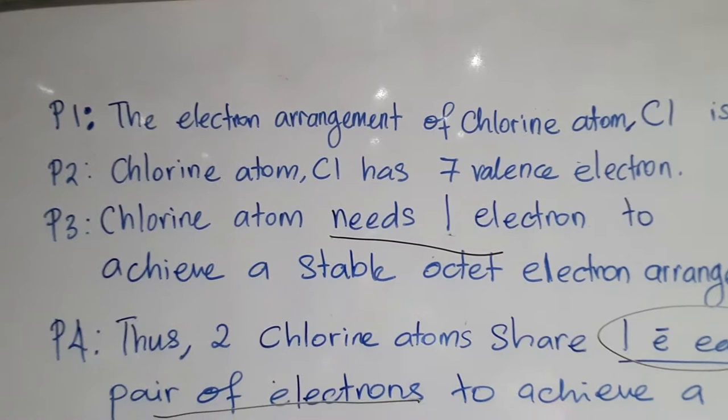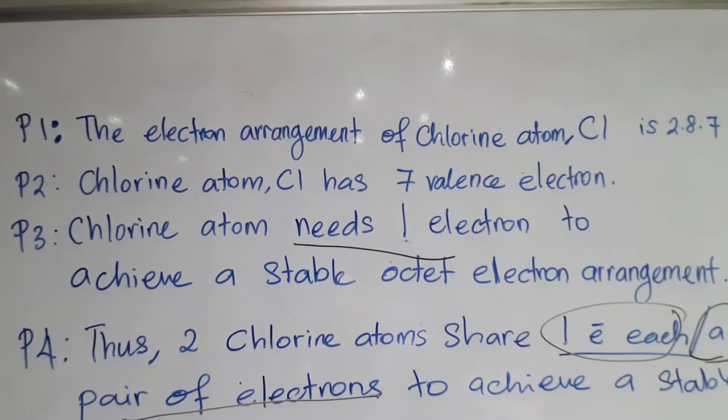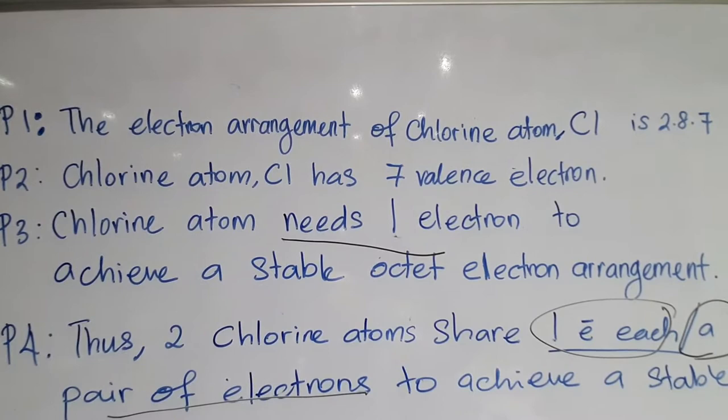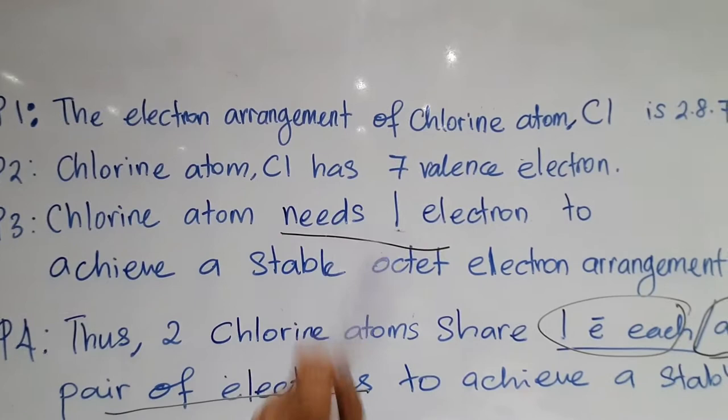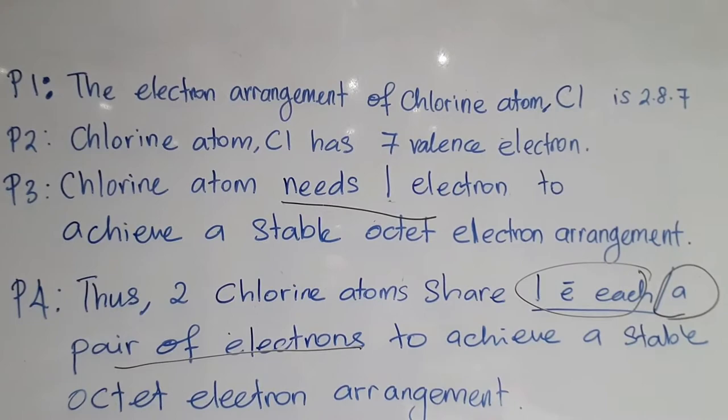Now look at the essay writing for the formation of chlorine molecules. Point one: you'll be talking about electron arrangement, so the electron arrangement of chlorine atom is 2,8,7. Point two: chlorine atom has seven valence electrons. Point three: for covalent compound formation, you have to talk about electrons they need — chlorine atom needs one electron to achieve a stable octet electron arrangement.